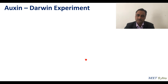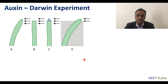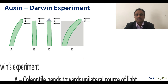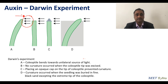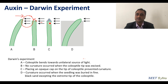To understand the discovery of auxin, consider Darwin's experiment. Darwin first observed the lightward bending of the coleoptile — when light is given, there is a lightward bending. When the tip is cut, there is no bending. So there must be a certain growth material available at the tip portion, though Darwin could not explain it further.